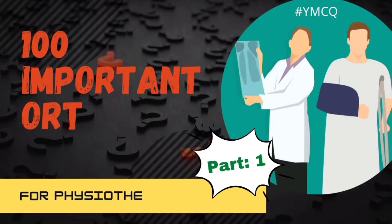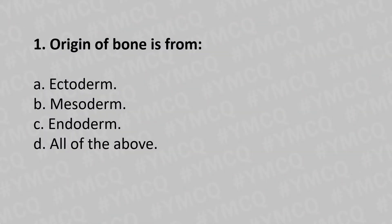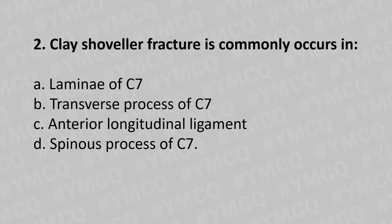Hello, welcome to today's topic: 100 orthopedic MCQ part 1. Moving to our first question: origin of the bone is — option A ectoderm, option B mesoderm, option C endoderm, option D all of the above. And the answer is option B mesoderm.